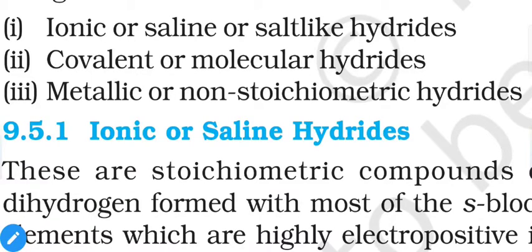All three categories fall in different blocks of the periodic table. Ionic or saline hydrides are usually formed from s-block elements combining with hydrogen. P-block elements combine with hydrogen to form covalent or molecular hydrides. D and f-block elements combine with hydrogen to form metallic or non-stoichiometric hydrides.